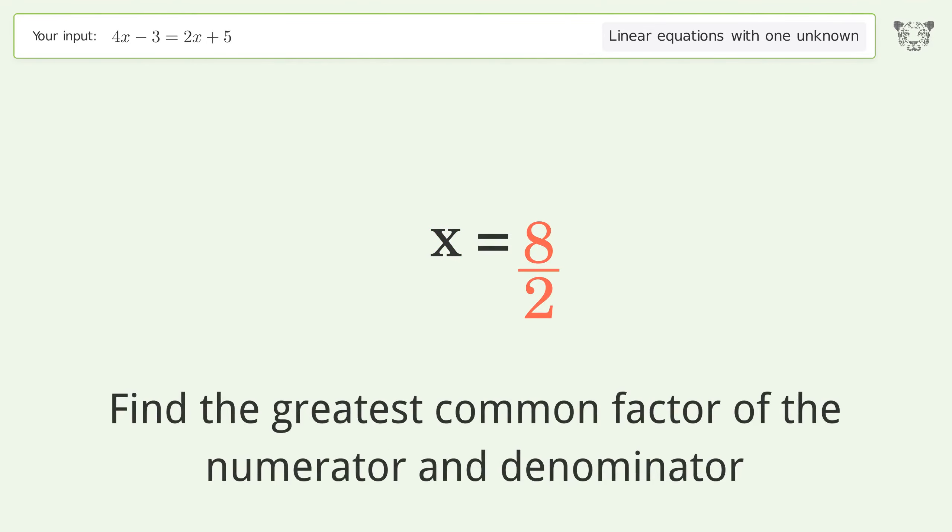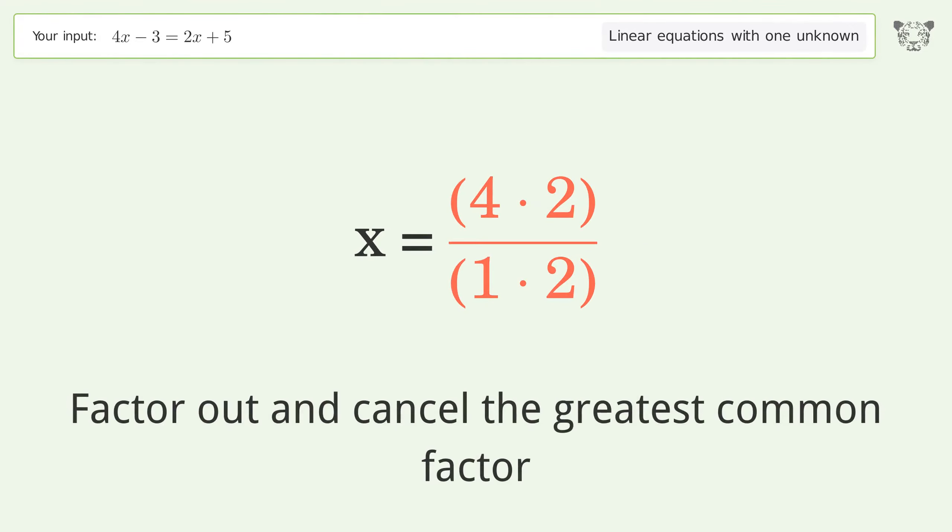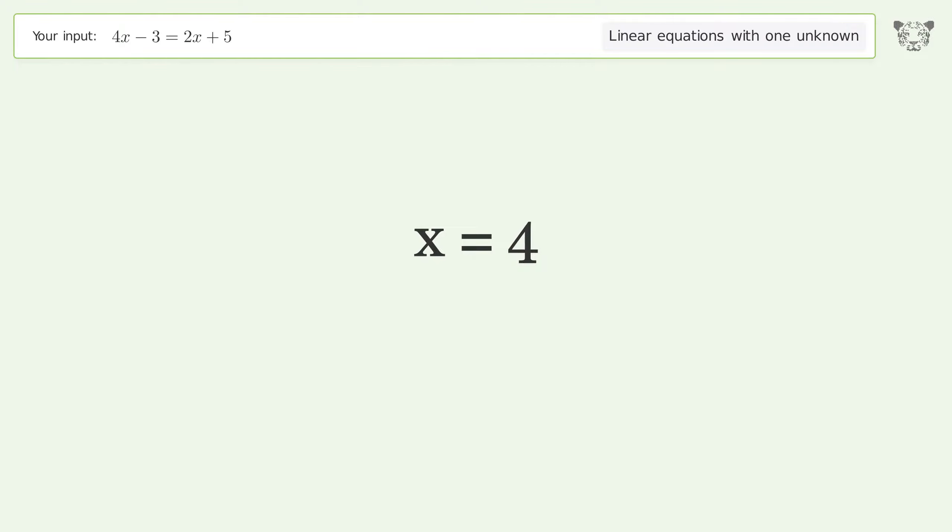Find the greatest common factor of the numerator and denominator. Factor out and cancel the greatest common factor. And so the final result is x equals 4.